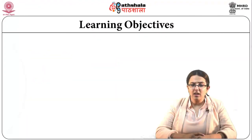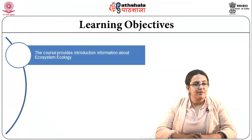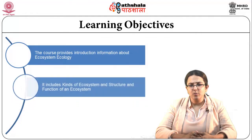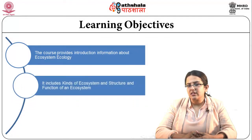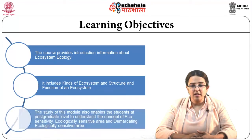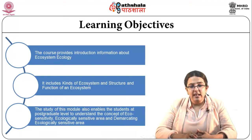The learning objectives of this module are pretty simple. We will first explain or provide information about ecosystem ecology. The second is to elucidate the kinds of ecosystems and the structure and function of an ecosystem. The third is to understand the concept of Ecosensitivity, Ecologically Sensitive Areas, and Demarcating Ecologically Sensitive Areas.